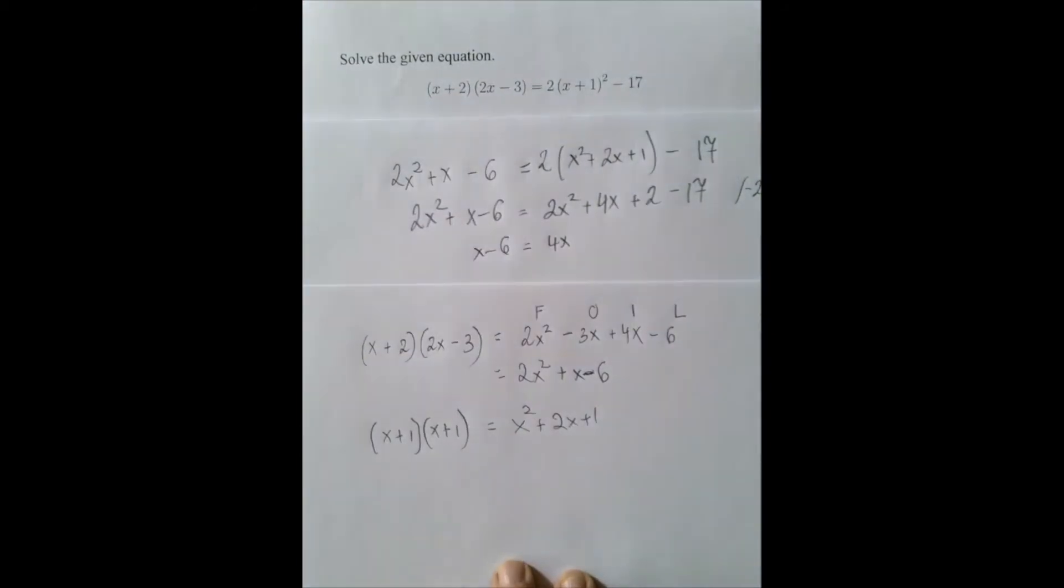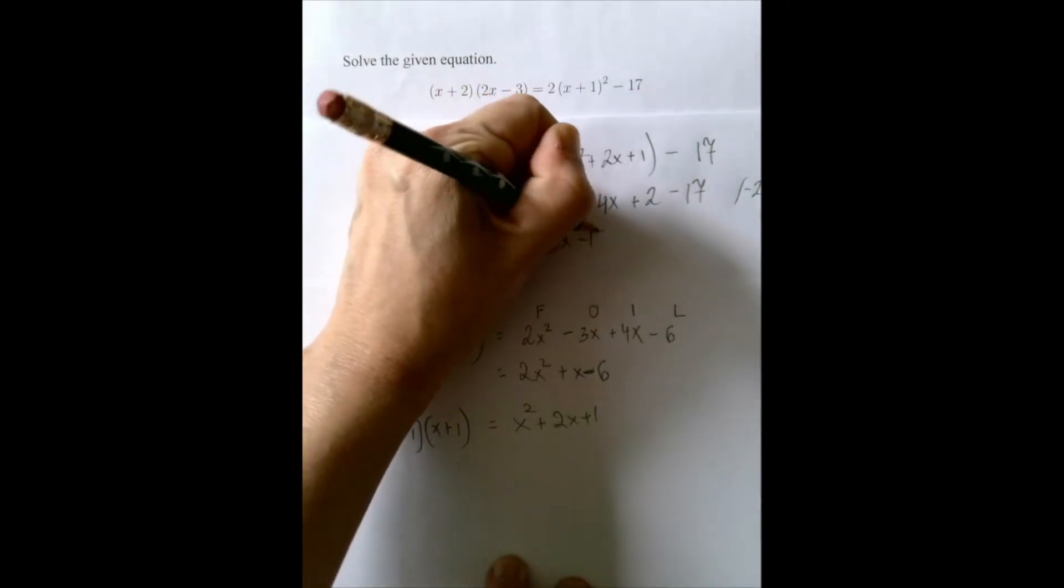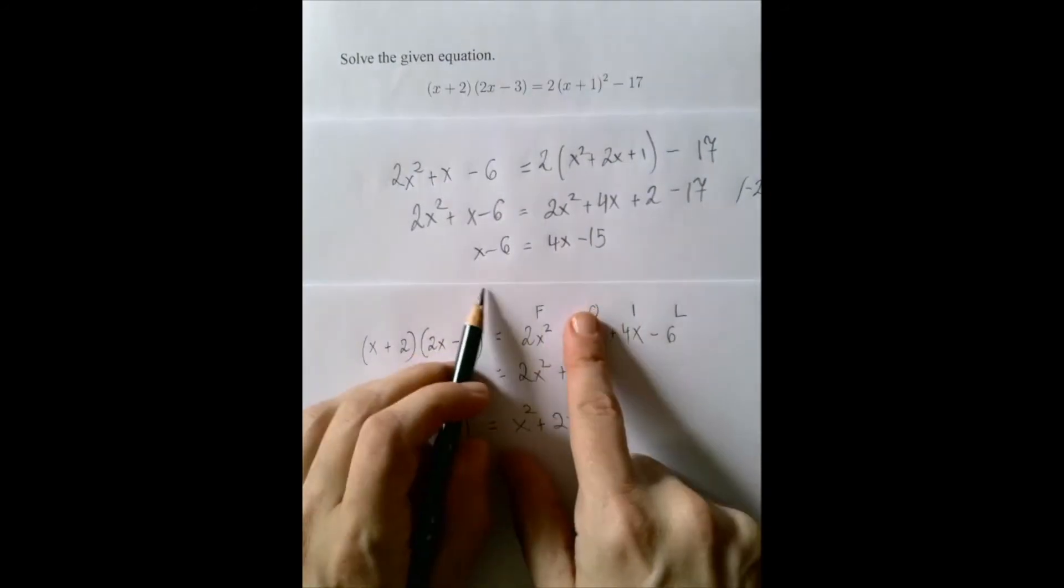And then we also combine like terms here, plus 2 and negative 17, that's minus 15. So, we have this cute small little linear equation now.